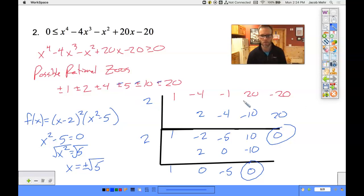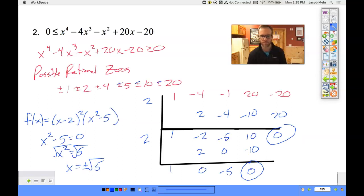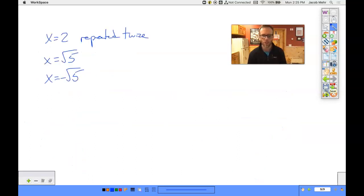So we have 2 repeated twice. And we have the square root of 5 and the negative square root of 5. All right, looks good.